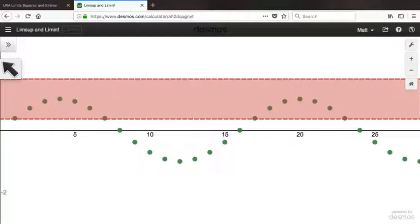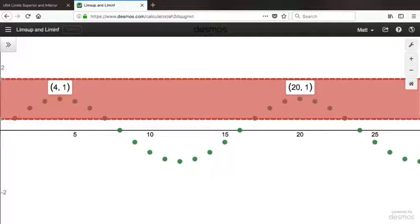this is minus 2, 0, 2. Lim sup is probably equal to 1. If I take the tops of these crests, it looks like the tops of the crests are actually equal to 1. If we choose the sequence 4 plus 16k, the 4 plus 16k-th terms of this sequence, the 4th, the 20th, the 36th, and so on, it looks like all those are actually equal to 1. So the limit of that subsequence would be equal to 1.